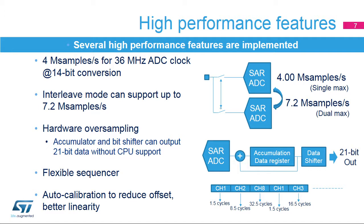The ADC includes oversampling hardware, which accumulates data and then divides without CPU help. The oversampler can accommodate from 2 to 256 times samples and right-shift from 1 to 8 binary digits. The sequencer allows the user to convert up to 16 channels in any desired order, and each channel can have a different sampling period.